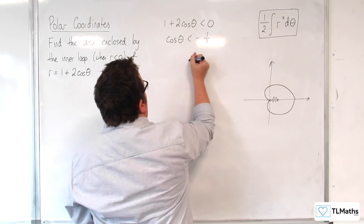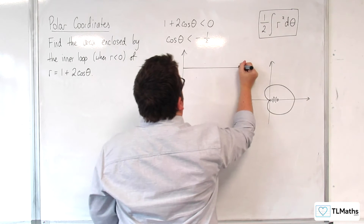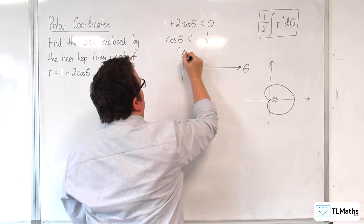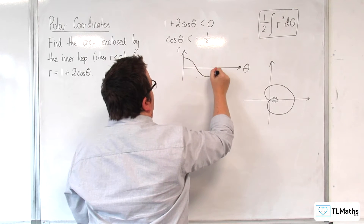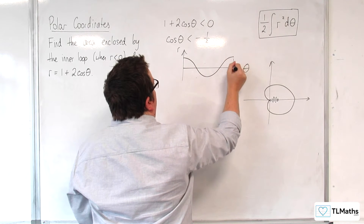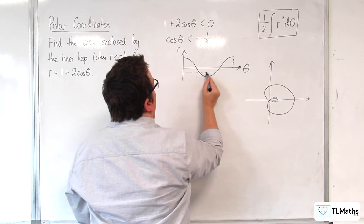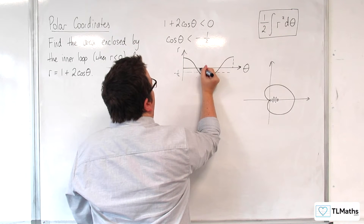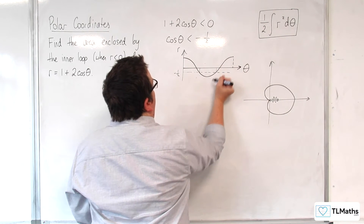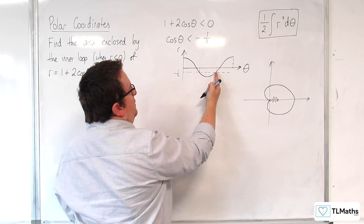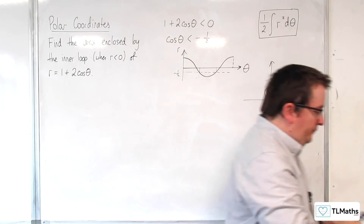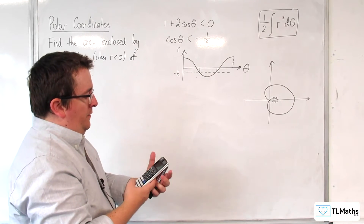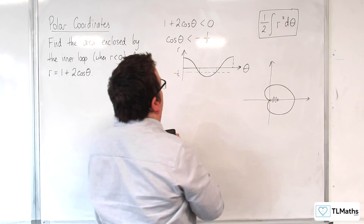So if we work out the values of when cosine theta equals minus a half, I'll do a quick sketch of cosine. So minus a half is there, and I'm interested in integrating between those two values of theta. The inverse cosine of minus a half is 2π/3.